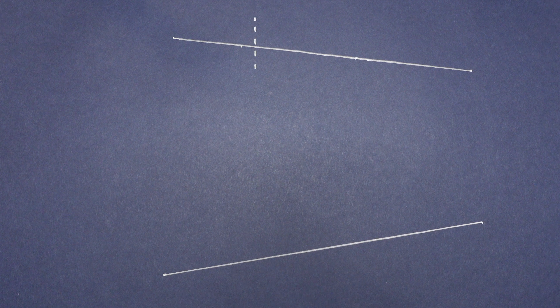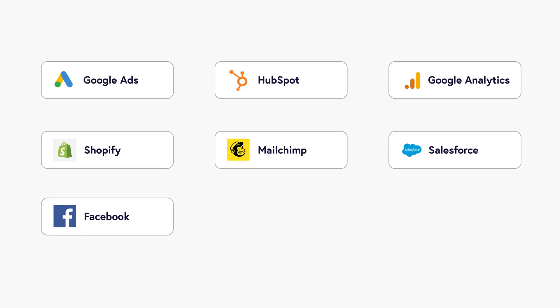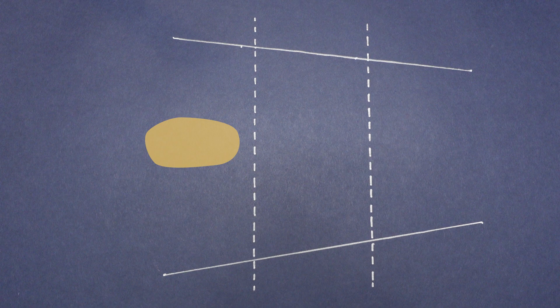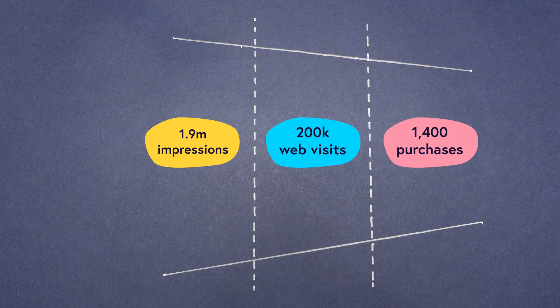Here's the mistake. When people design their marketing funnel they start with what you might call the classic funnel: awareness, consideration, decision. Sometimes you also see interest and desire included as stages. Then they ask themselves how will I measure the stages of this funnel. So they look at the marketing tools which are really good at measuring digital activity and user behavior, and they assign a metric they think best fits each stage. So maybe for awareness they might track social media impressions, for consideration they might track website visits, and for decision they might track purchases.